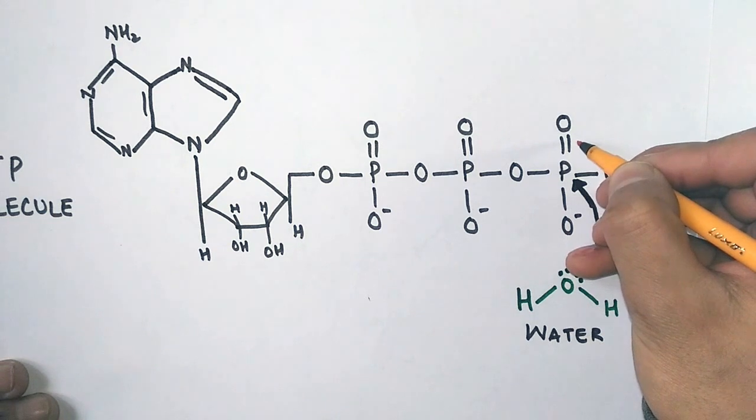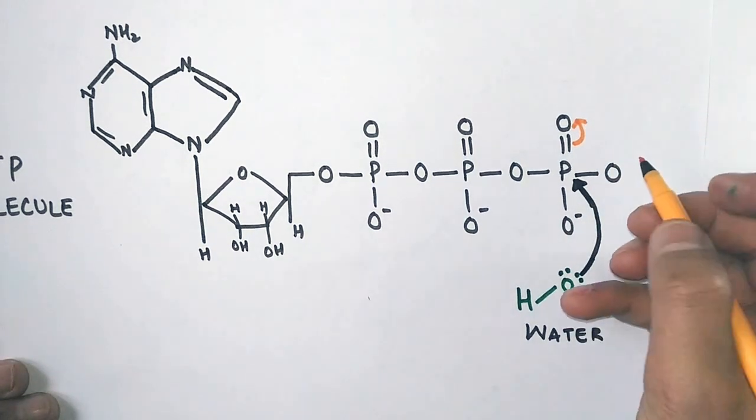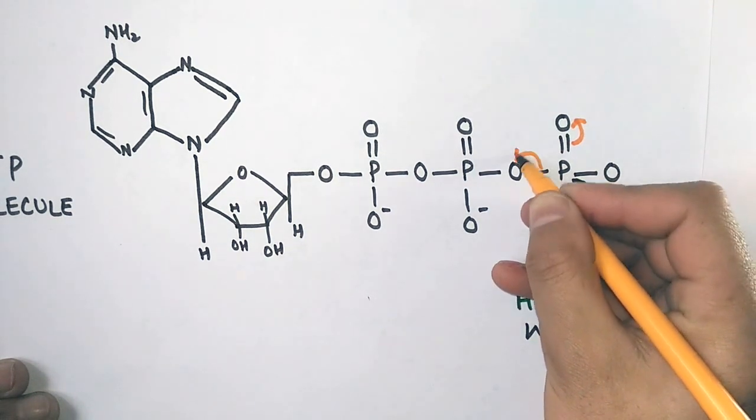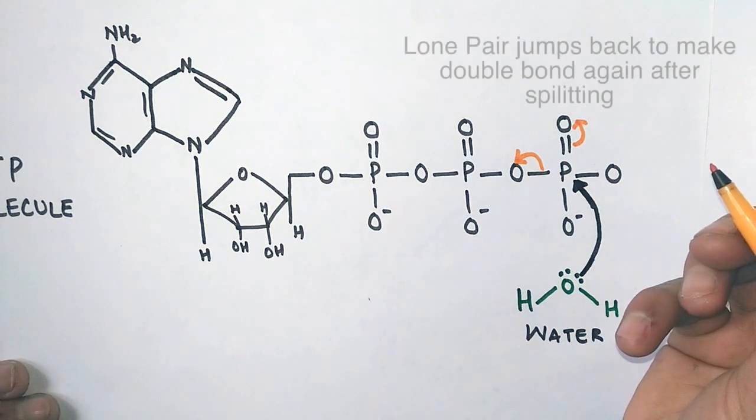First, the double bond shifts to the oxygen. Then the bond between oxygen and phosphorus—the phospho-anhydride bond—breaks down because the phosphorus has only the ability to make five bonds.